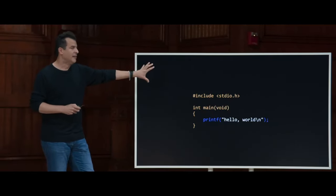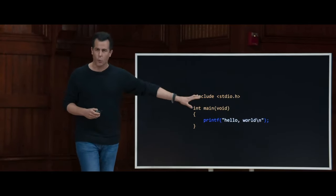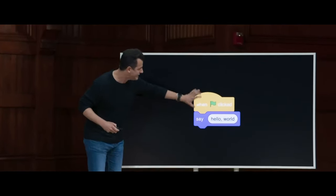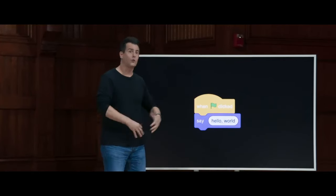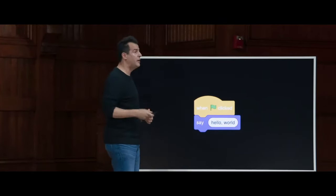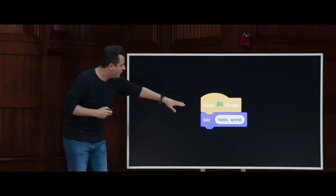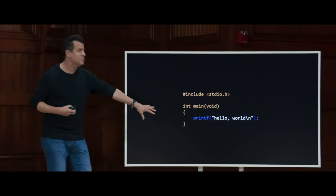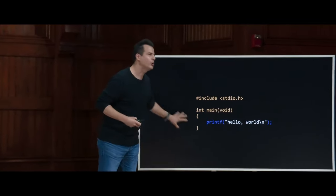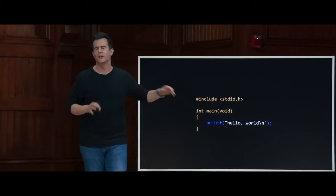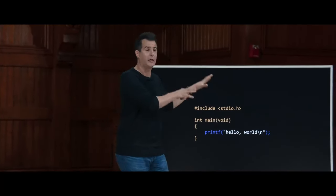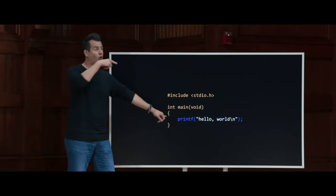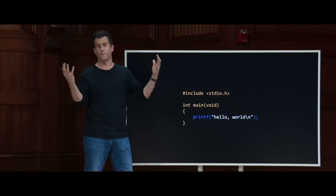Let's come back to this picture — the very first program that I wrote, that you wrote, which just says 'hello, world.' Today, those puzzle pieces are going to start to look more like C code. The when-green-flag-clicked piece is in yellow; the purple block is the verb, the action, the function that does something. In C there's some boilerplate orange text you take for granted, and the purple function previously called 'say' in Scratch is now called printf.